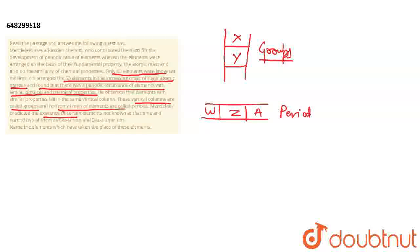Mendeleev predicted the existence of certain elements not known at the time and named two of them as Eka Silicon and Eka Aluminium.